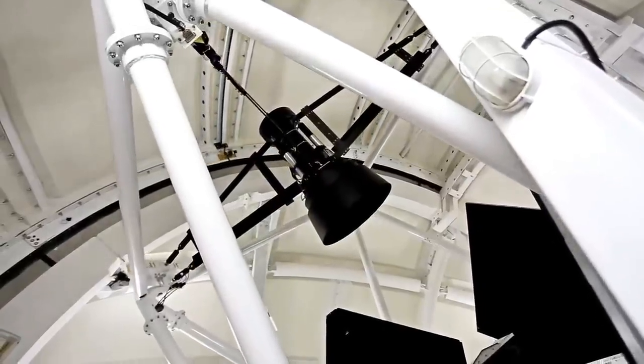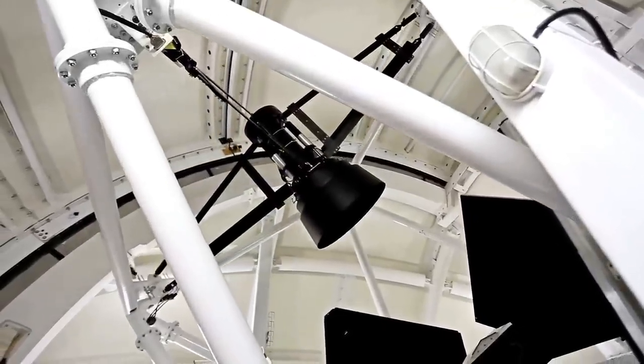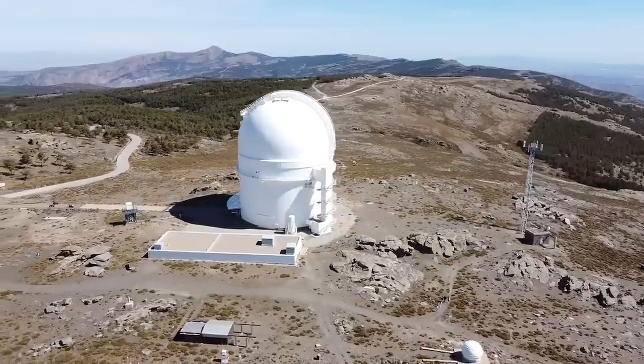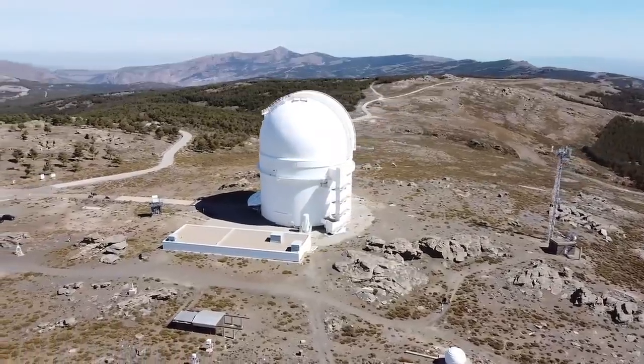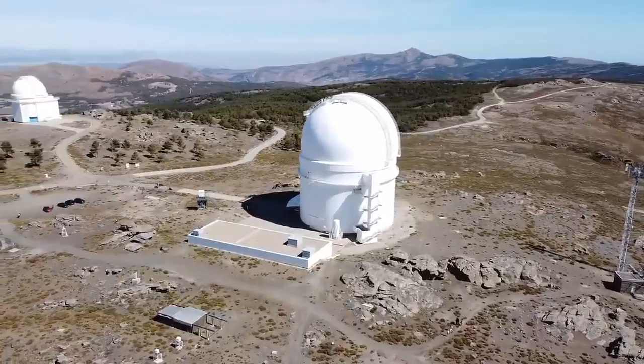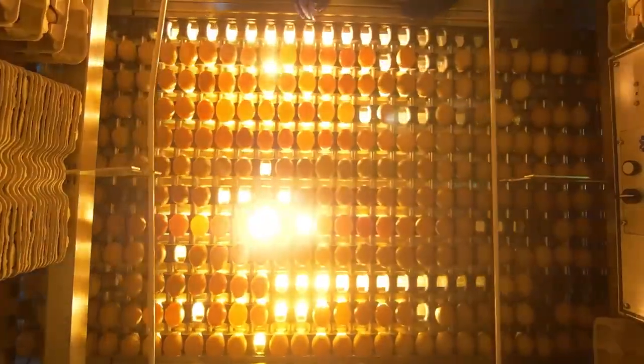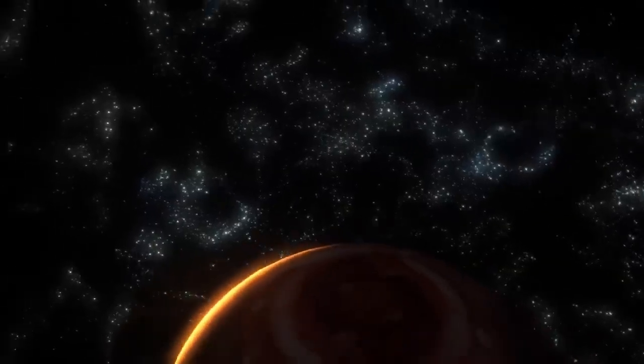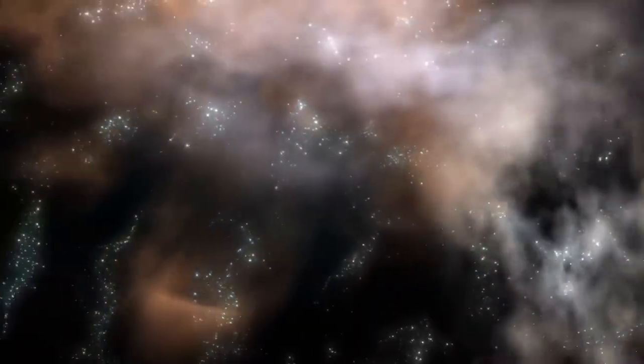This red supergiant, situated in the Orion constellation, has historically been among the brightest objects in the night sky, drawing the curiosity of both professional astronomers and stargazers alike. Yet it is Betelgeuse's recent erratic behavior that has sparked a surge of scientific interest. The star has begun to behave in an unusual manner, exhibiting significant and unexpected changes in brightness.